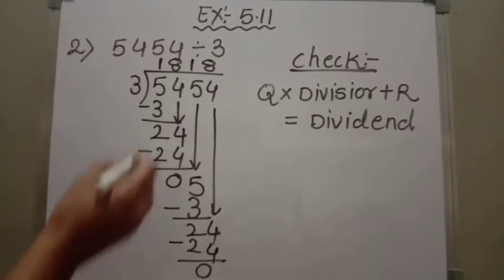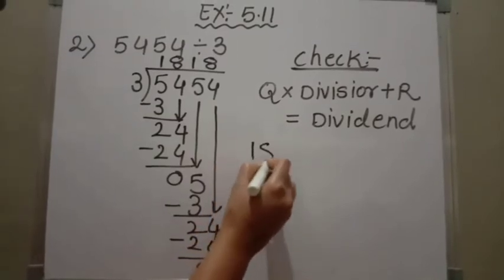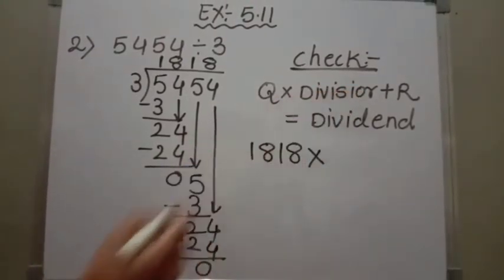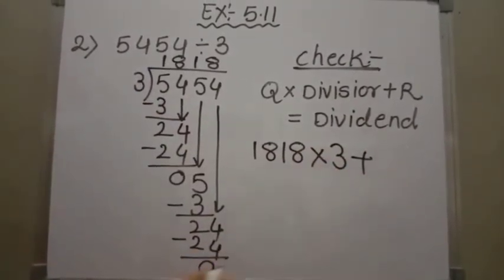Now substitute the values in the given formula. What is the quotient? Quotient is 1818. So I am going to write 1818 times the divisor, which is 3, plus remainder. Remainder is 0.